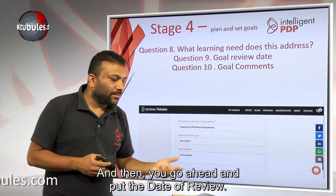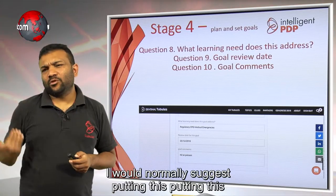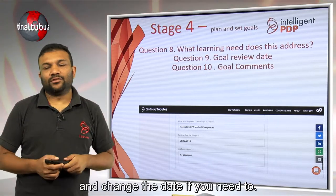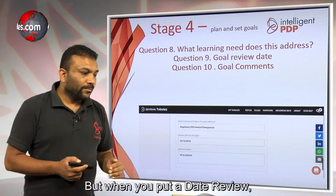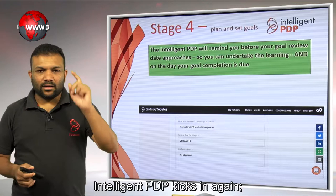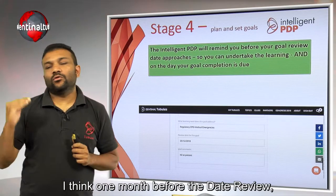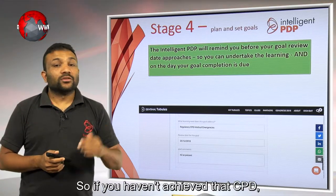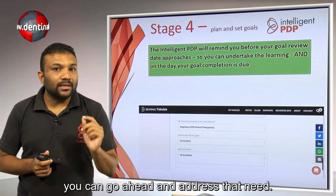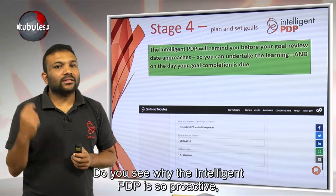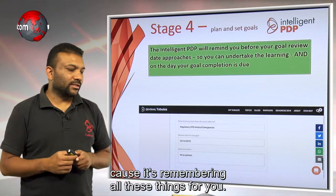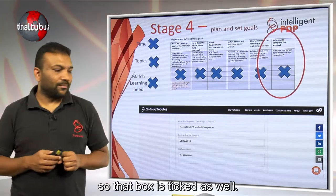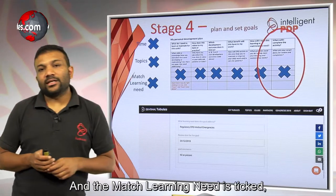Then go ahead and put the date of review. I'd normally suggest putting this as end of the year, not the end of your cycle, so that you can review and change the date if needed. When you put a date of review, Intelligent PDP kicks in again — I think one month before and on the day it sends you a reminder that your goal is due for review. So if you haven't achieved that CPD, you can go ahead and address that need. The GDC template also asks when you will achieve this goal — that box is ticked too.